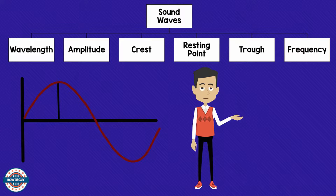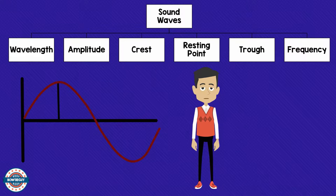There are many parts of a sound wave: a wavelength, an amplitude, a crest, a resting point, a trough, and a frequency.